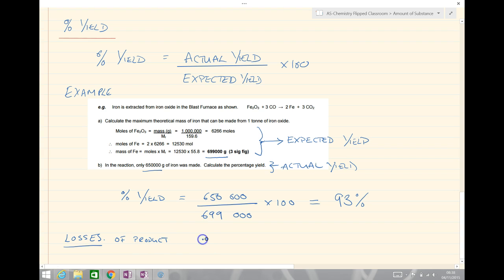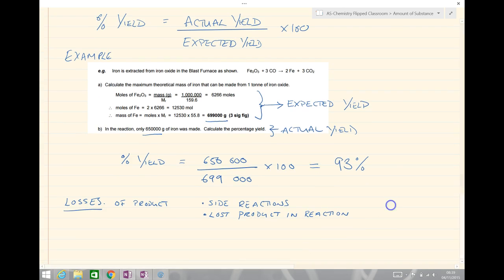Perhaps we've got some side reaction. Perhaps we've lost some product in the reaction. Or equally, just as likely, is perhaps a reversible reaction so we don't fully form the product. But perhaps it just won't go to a full 100% yield. These are possible reasons for loss of product.